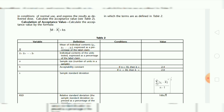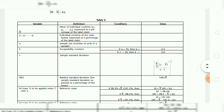The formula is: M minus x-bar plus ks. I will discuss with you through this table covering Variable, Definition, Conditions, and Value. So let's start.